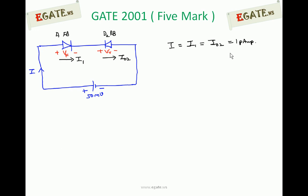So the first answer is I equals 1 pA. Next we need to calculate Vf and Vr. We know diode 1 is forward biased, and current flowing through it is I1. Use the diode current equation.